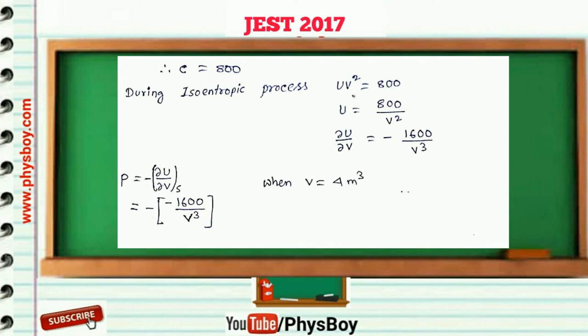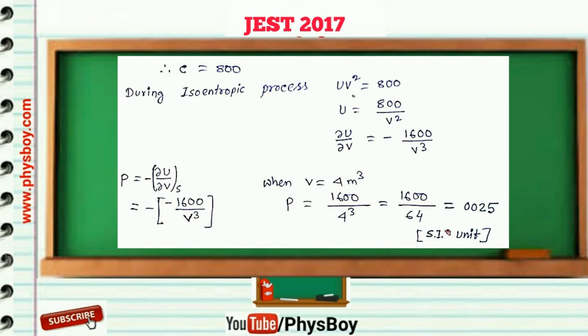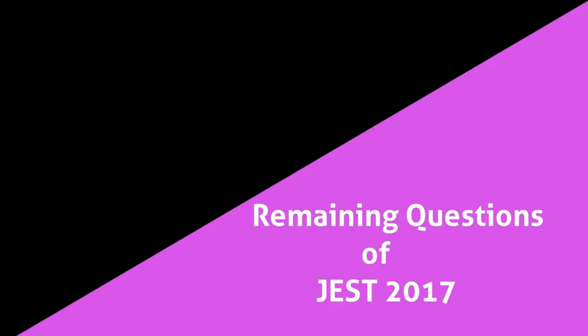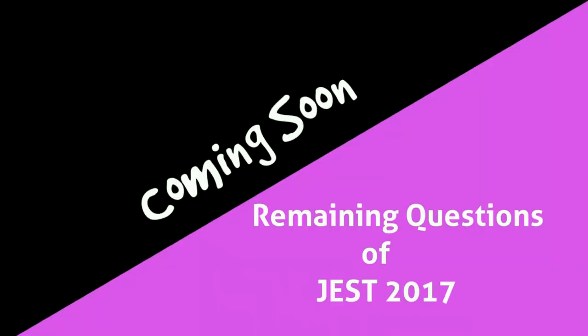When V = 4 m³, the final pressure is P = 1600/4³ = 1600/64 = 25 Pa. In the JEST exam, answers must be given as 4-digit integers, so the answer is 0025.